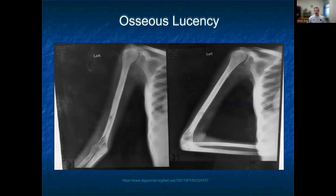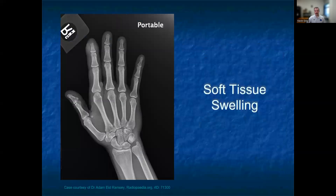We can see osseous lucency as seen in this humerus image, with a couple of different areas where there is decreased osseous signal in an area where we would expect to have more calcification. Occasionally, you will also just see findings of soft tissue swelling as seen in the second digit here, without any other abnormal radiographic findings.